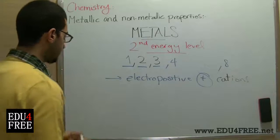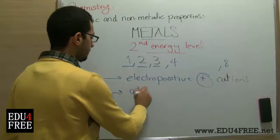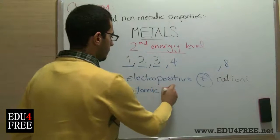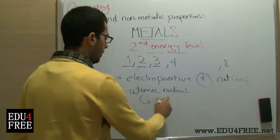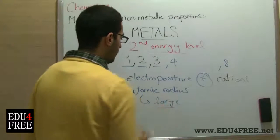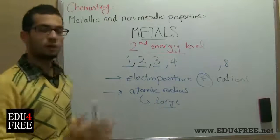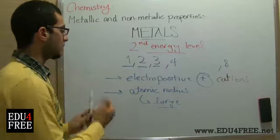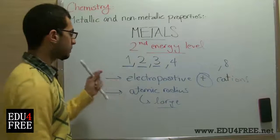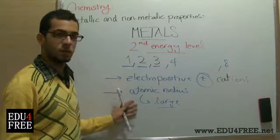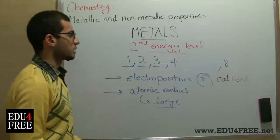Finally, the atomic radius of metals is large. This means that the outermost electrons of metal atoms are far from the nucleus, and so this leads to less ionization energy and less electron affinity. So these are the properties of metals.